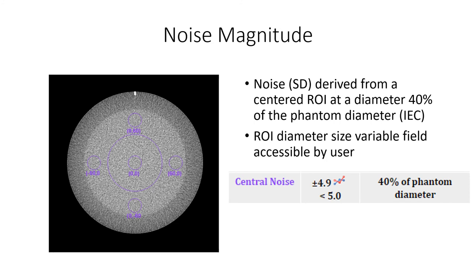Noise magnitude follows IEC guidelines with a measurement using a central region of interest sized at 40% of the phantom diameter. This diameter parameter is accessible by the user through the report profile manager.